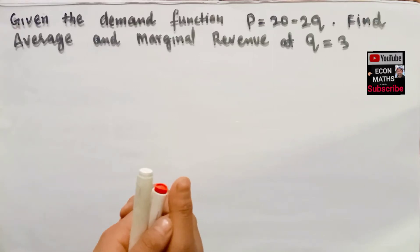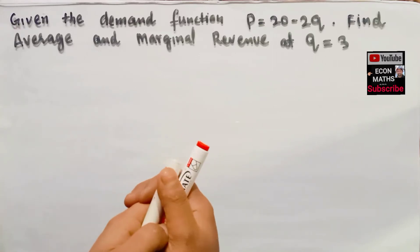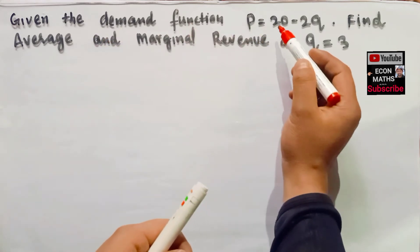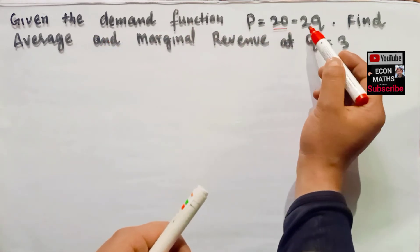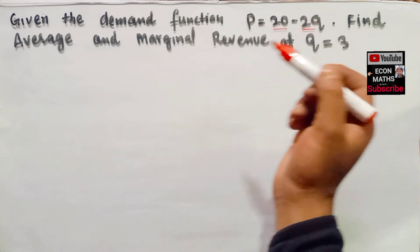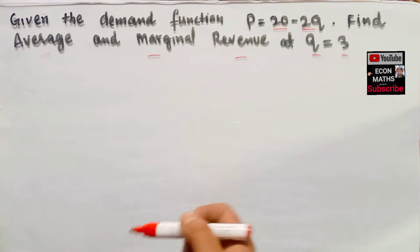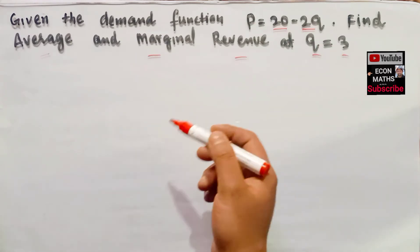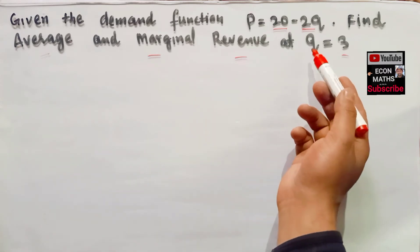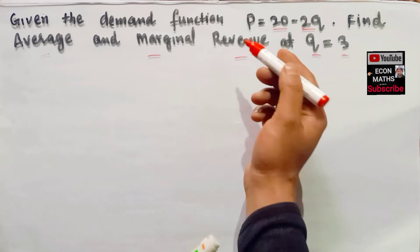In this video we will try to solve a numerical on finding the average and marginal revenue. The question is: given the demand function P is equal to 20 minus 2Q, where P is the price and Q is the quantity, find the average and marginal revenue at Q is equal to 3.